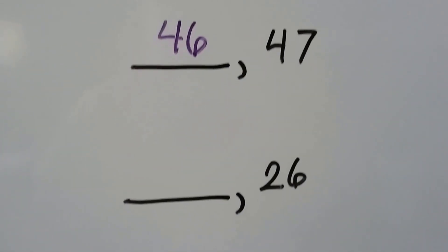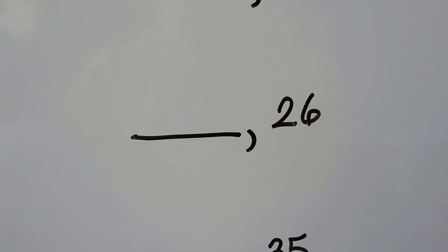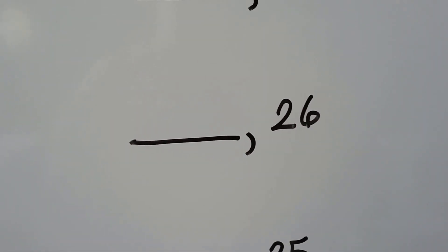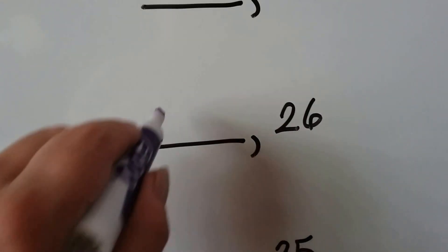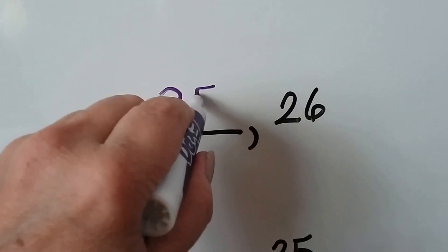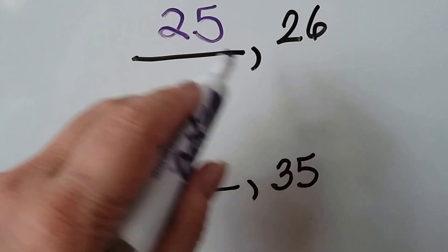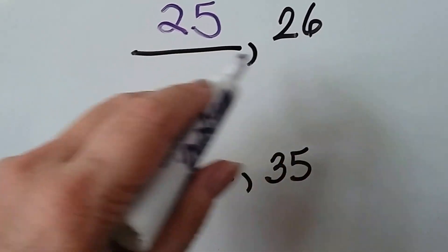Six comes before seven. What number comes before 26? What number comes before the six? A five, so it would be 25. We keep the ten and we just write the number that is one less than the ones.